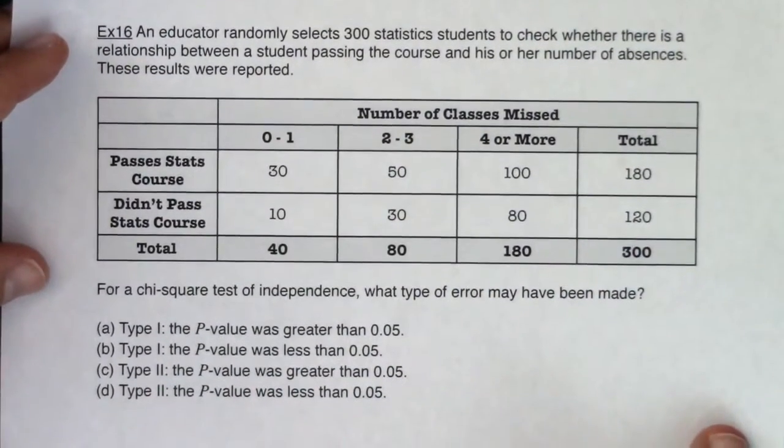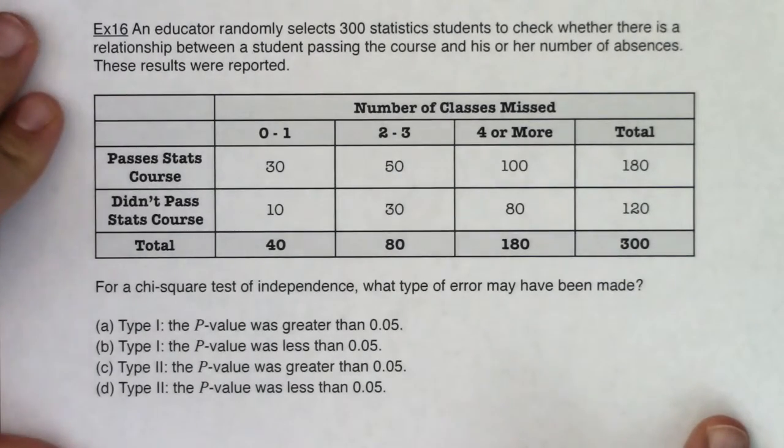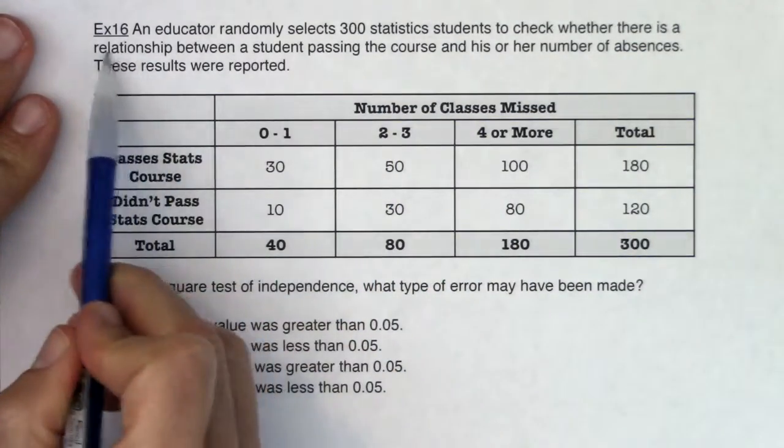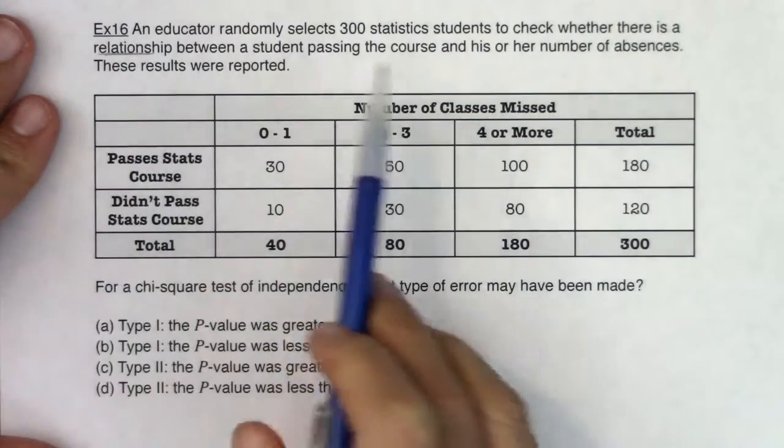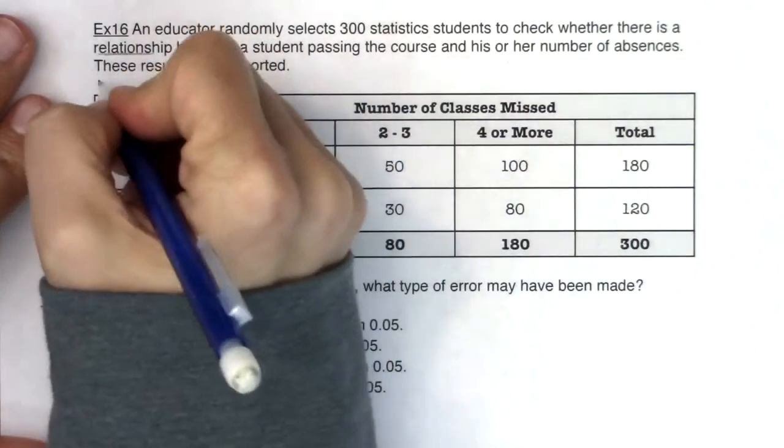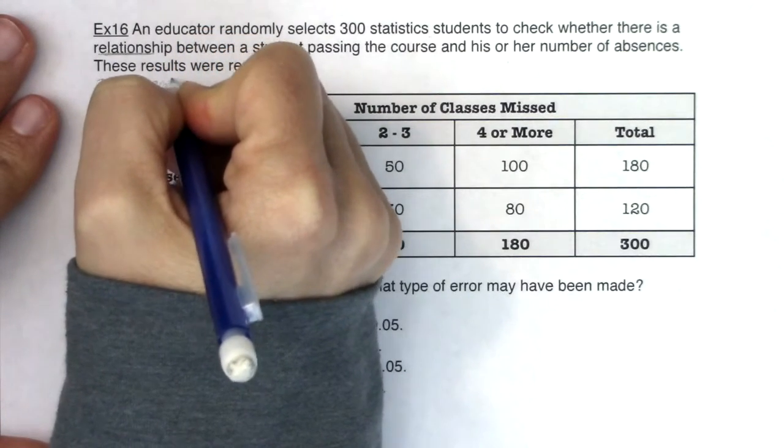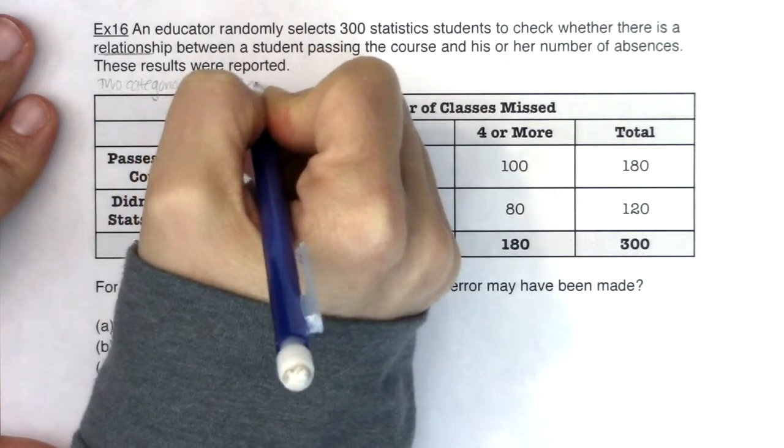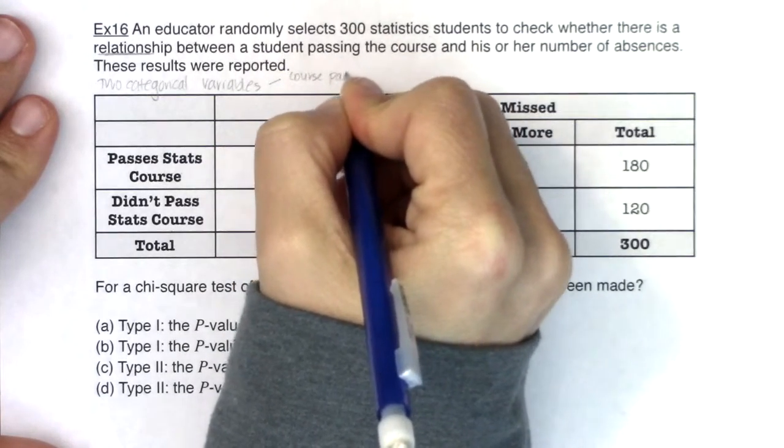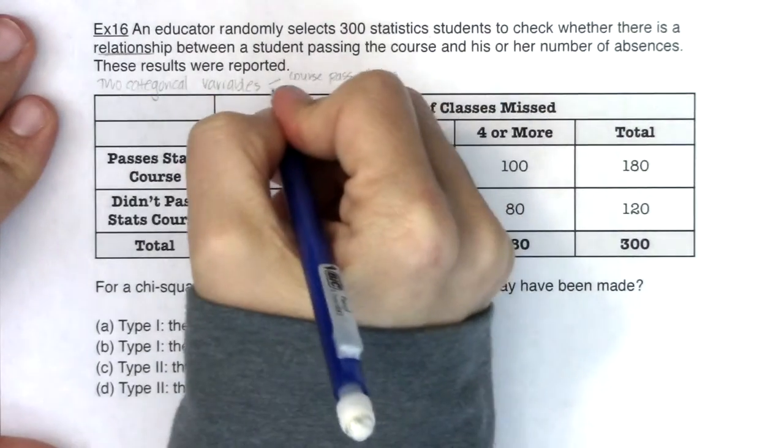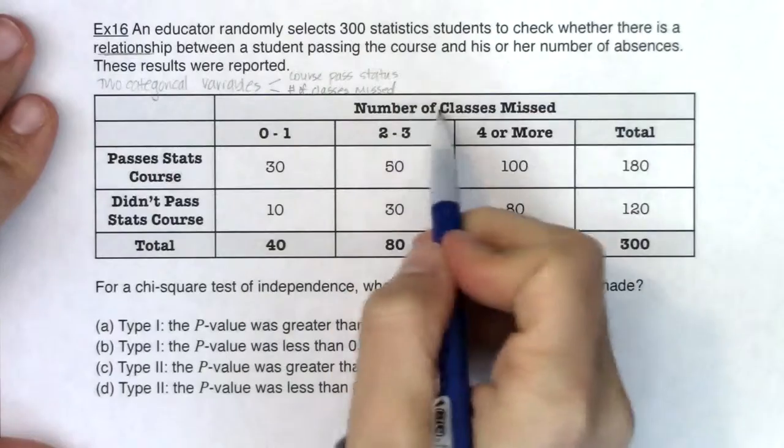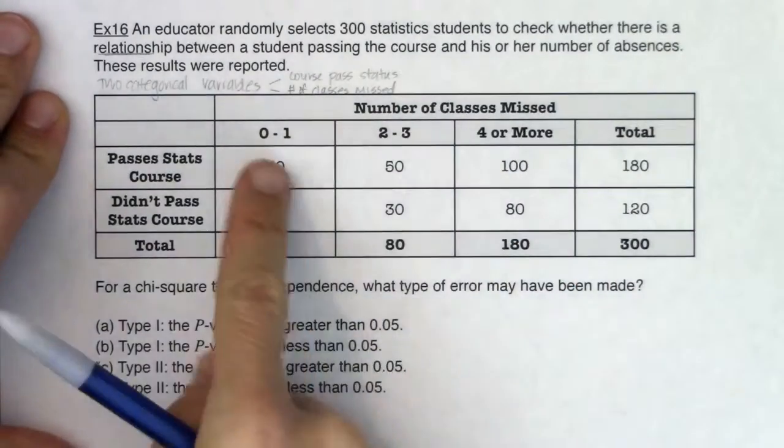So this says an educator randomly selects 300 statistics students to check whether there is a relationship. So I can already see it's going to be a chi-squared test for independence, a relationship between the student passing the course and his or her number of absences. So it looks like I have my two categorical variables. I have your course pass status and then number of classes missed. And you might be saying to yourself, hey, Miss A, number of classes missed, that's a numerical variable. And then I agree with you, but they put it into categories. They clumped you into the zero or one category, two to three, or they put you in the four or more. So they took this discrete numerical variable and put it into categories.